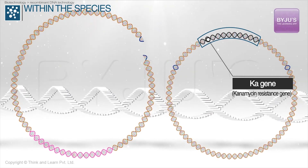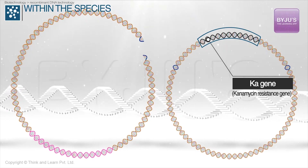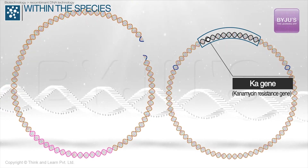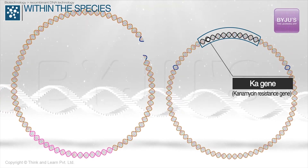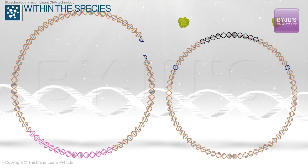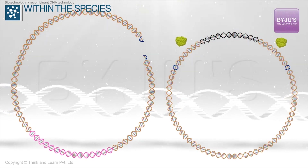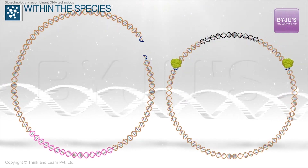Again, this plasmid had two restriction sites for ECO-R1, and it was not within the KA gene. So the KA gene was left intact by ECO-R1.